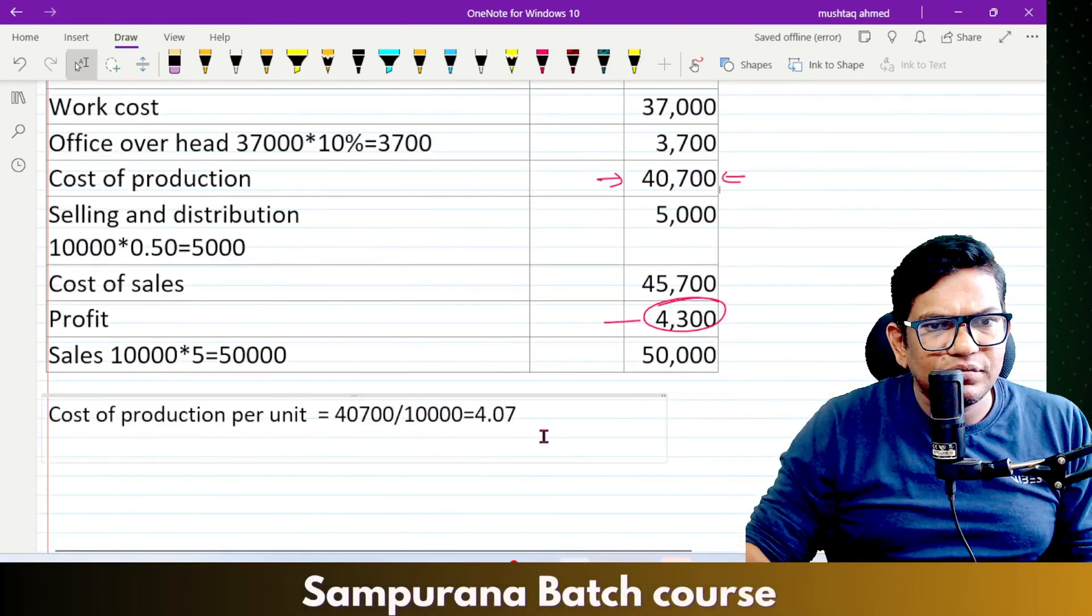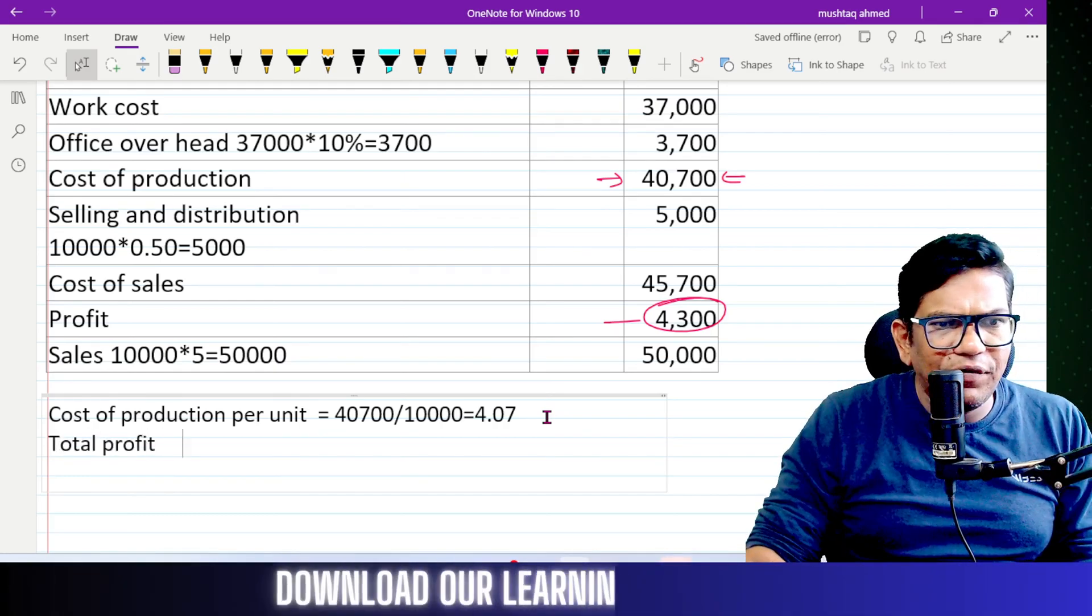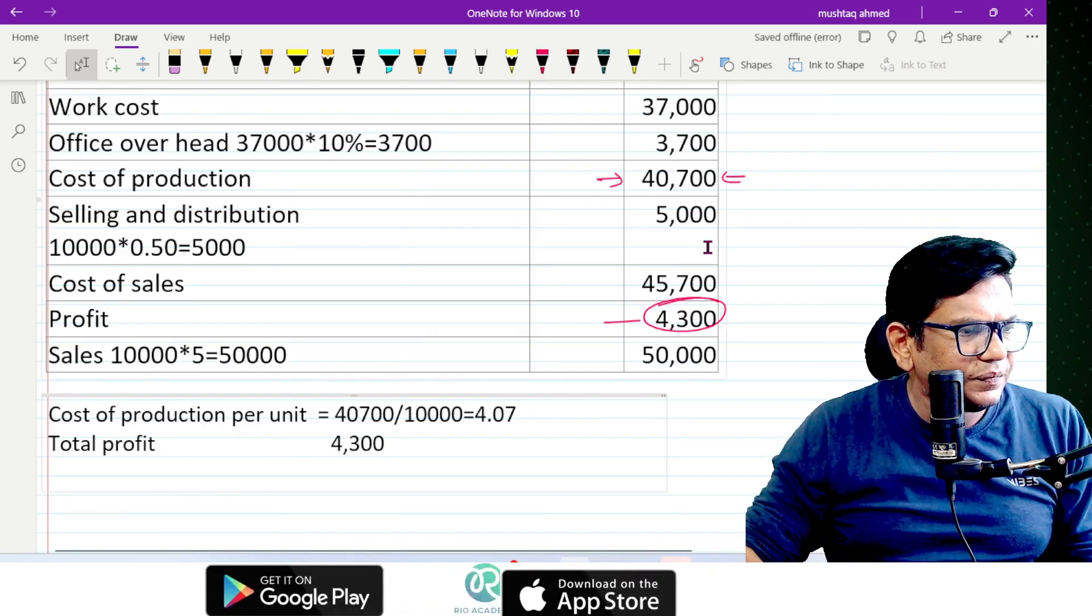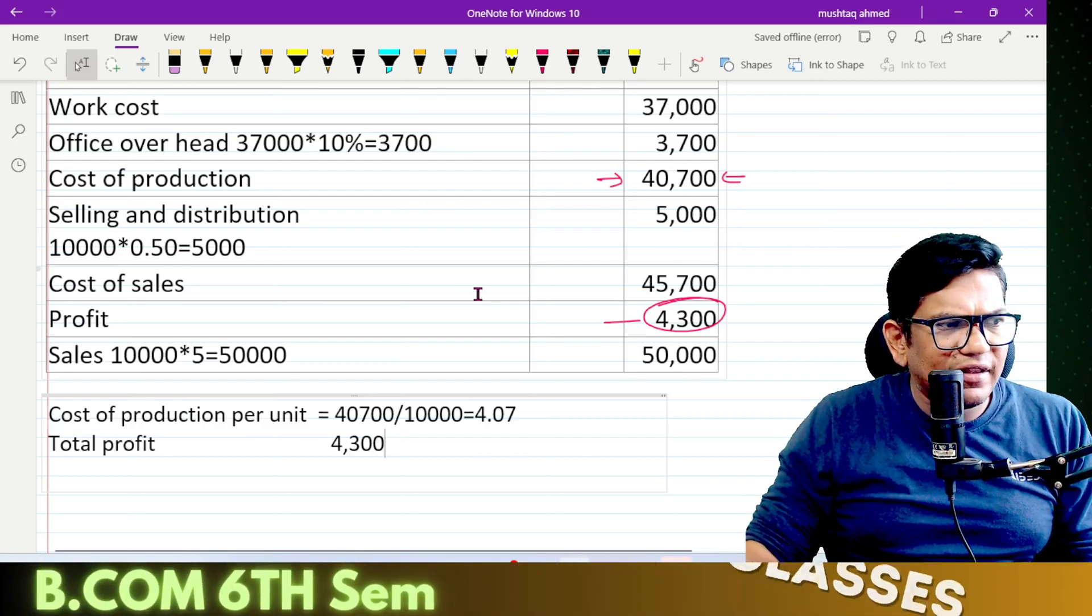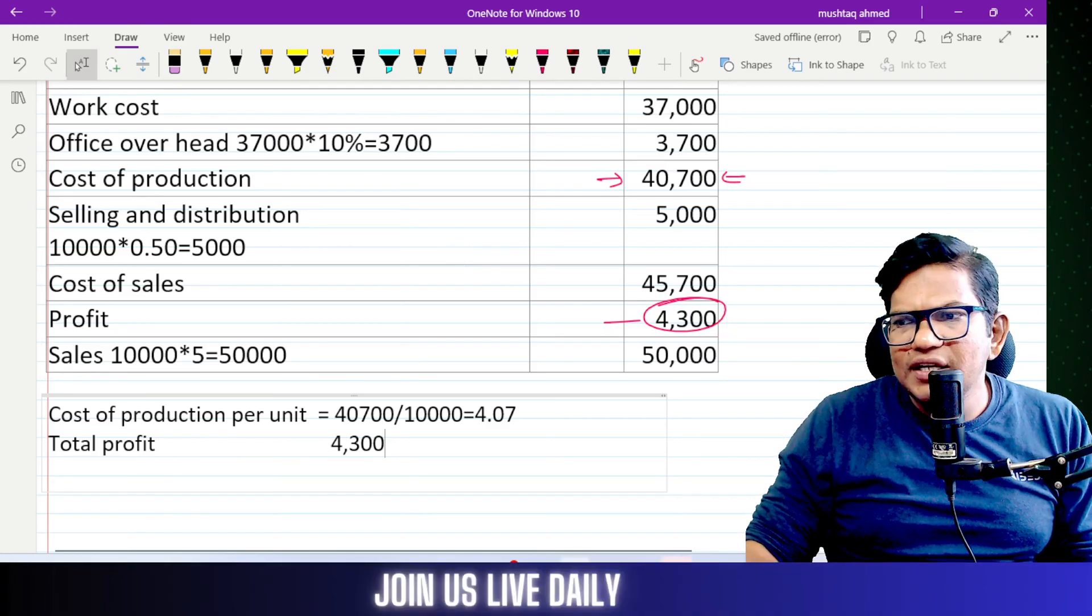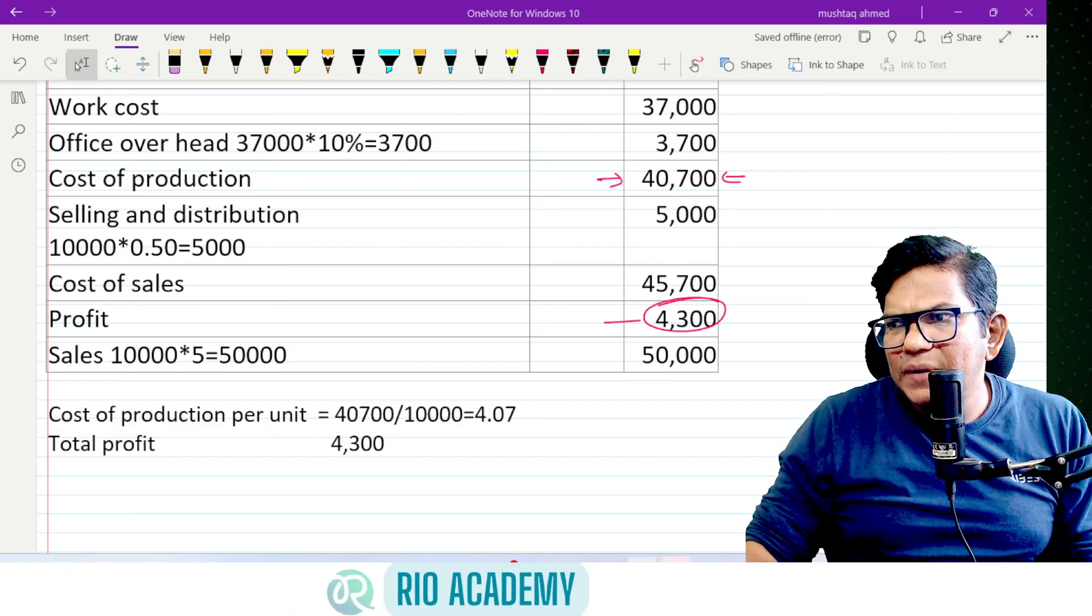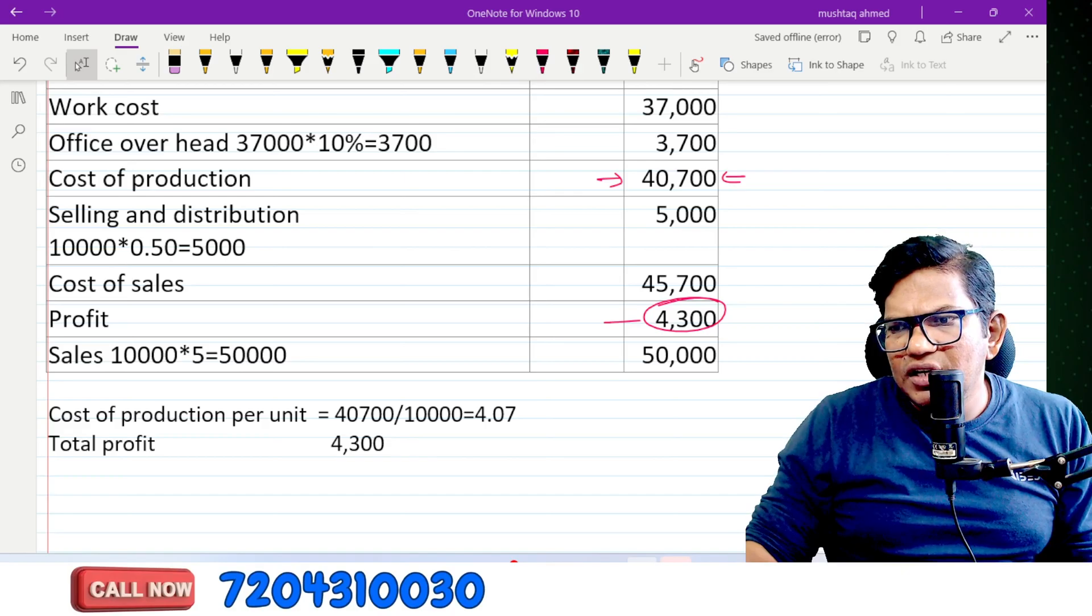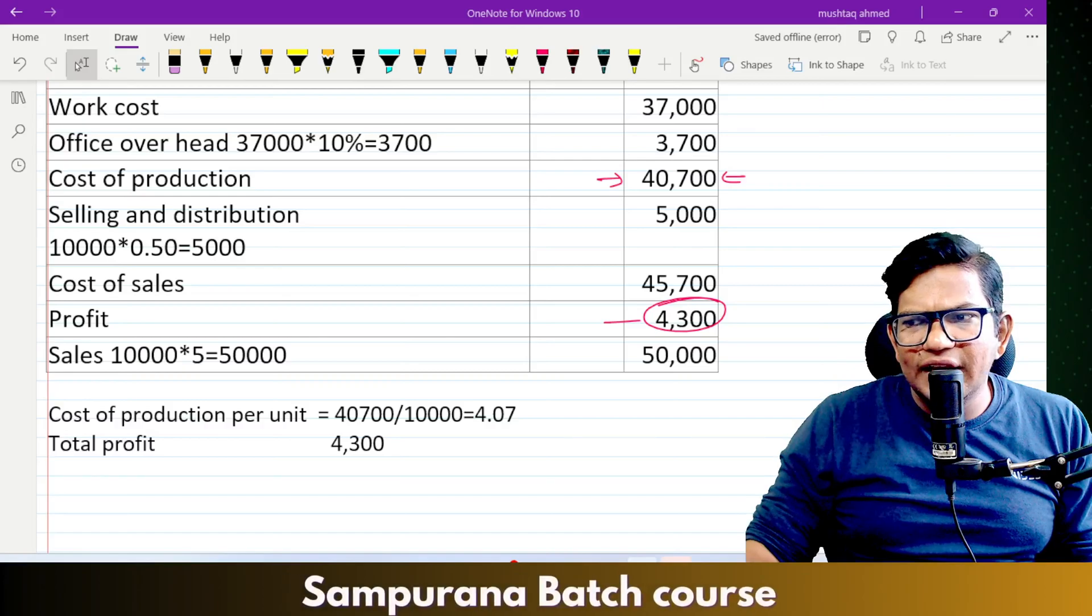is 4,300. Download the Rio Academy application for management accounting classes. Is that clear? This is a 2023 question.